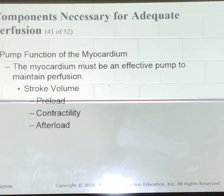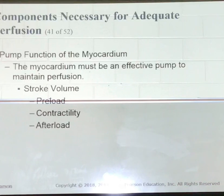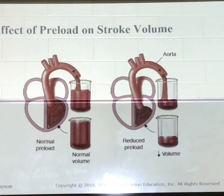Afterload is the resistance in the aorta that must be overcome by contraction of the left ventricle to eject the blood. High diastolic blood pressure creates high afterload, which increases myocardial workload. Over time, this high afterload can lead to left ventricular failure. High blood pressure is going to lead to left ventricular failure.